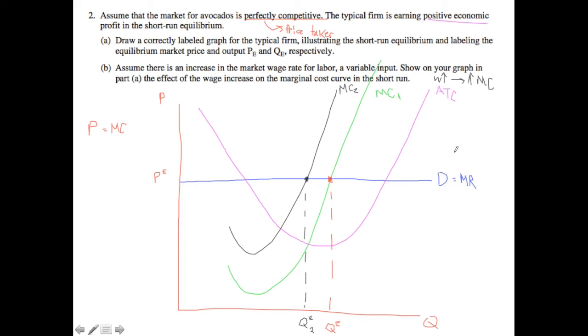So now let's look at part C. Assume that avocado producers hire workers from a perfectly competitive labor market. Draw a graph of labor supply and demand for the typical firm and label the supply curve MFC and demand curve MRP. Assume that the market wage increases from W1 to W2 and show the effect of the wage increase on the graph, labeling the initial quantity of labor hired as QL1 and the new quantity of labor hired as QL2.